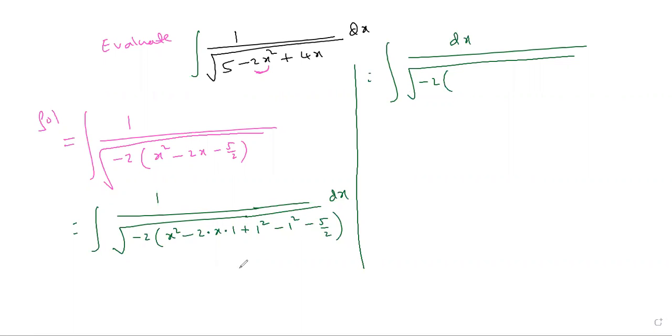Now the first three terms can be written as (x - 1)². Why? Because the middle one is -2ab. So remaining this part is -1 - 5/2. What is this? Two LCM: -2 - 5 which is -7/2.